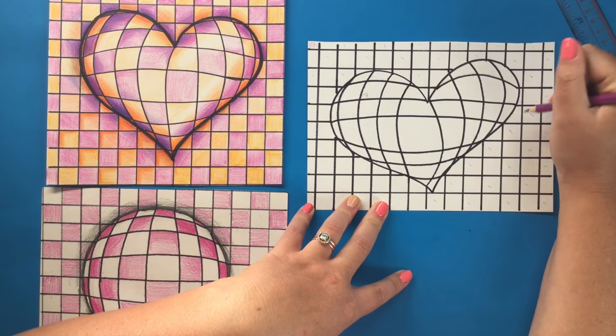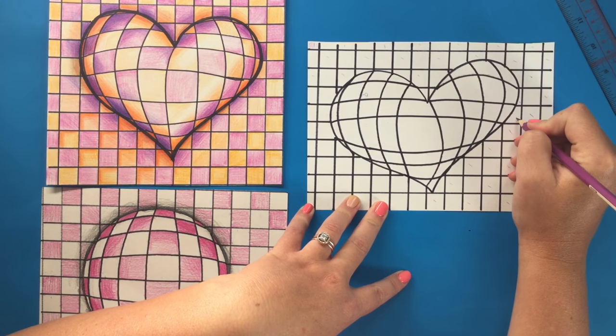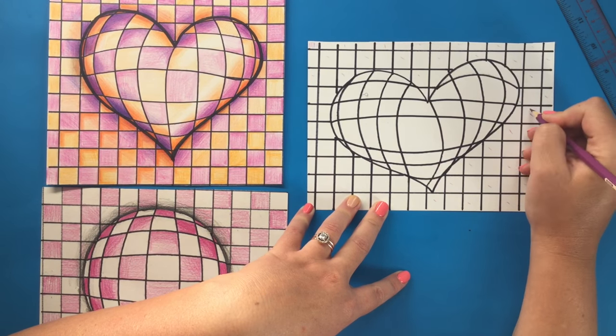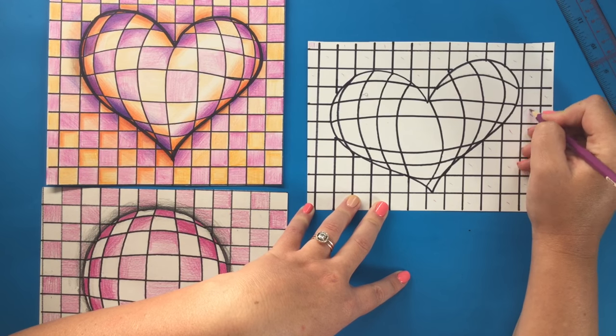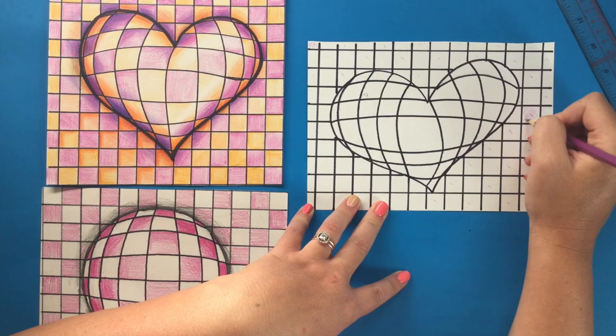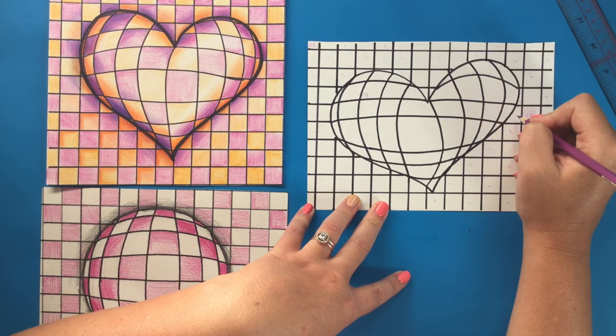But then what you can do is noticing that this one should be white instead of colored because this one is colored. Just choose one area where you can easily identify that this one is colored, this one is white.